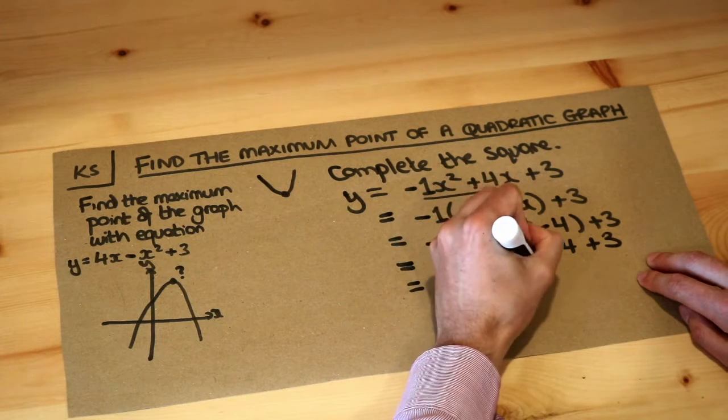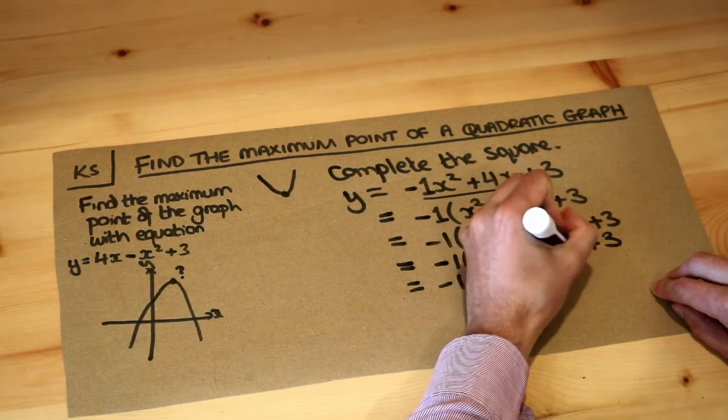And then if we just tidy that up a bit, plus 4 plus 3 is 7. So we get this.